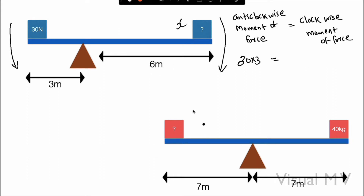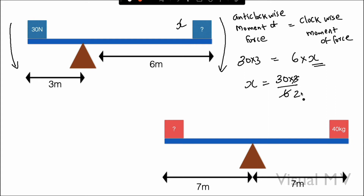The distance on the right side is 6 meters, and we don't know the force, so I am considering it as X. The equation becomes 30 × 3 = 6 × X. Solving for X: X = (30 × 3) / 6 = 15. So the answer is 15 Newton.